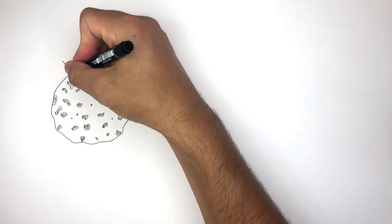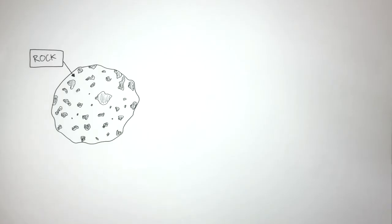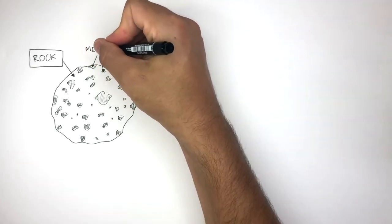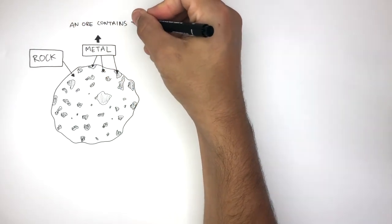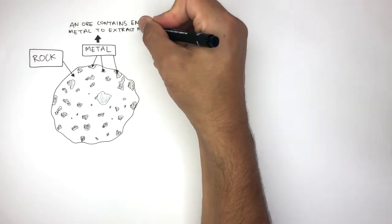In this ore, the white part represents the rock, and the black part represents the metal. Now many rocks contain metal, and if the rock does not contain enough metal, so when it is extracted money is made, then it is not an ore. So an ore contains enough metal to extract for money.